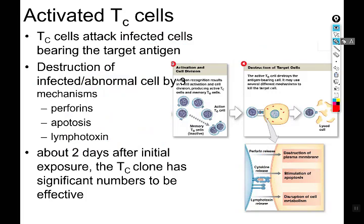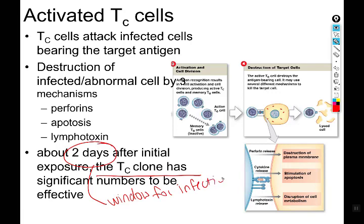One key component of the immune system is the timing of things. We've all experienced illness onset where day one you feel a little off, day two you're getting sick, and by day three you feel miserable. There's a window between initial exposure and when the clone army has enough numbers to be effective. During that roughly two-day window, this is the window for infection to either take hold or not — especially on first exposure, it can be very nasty.